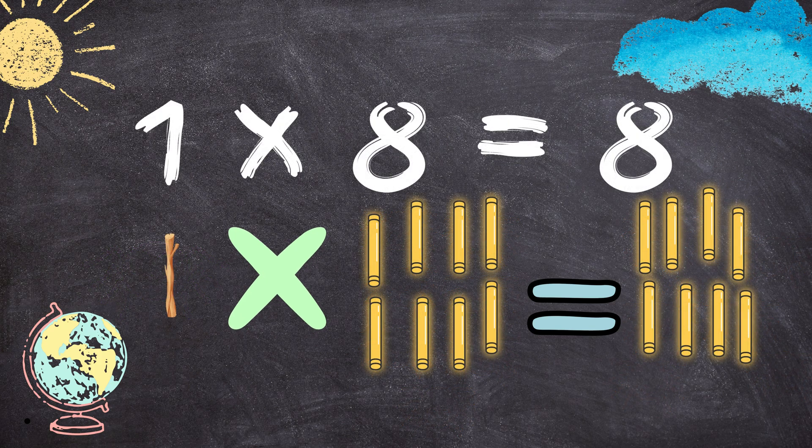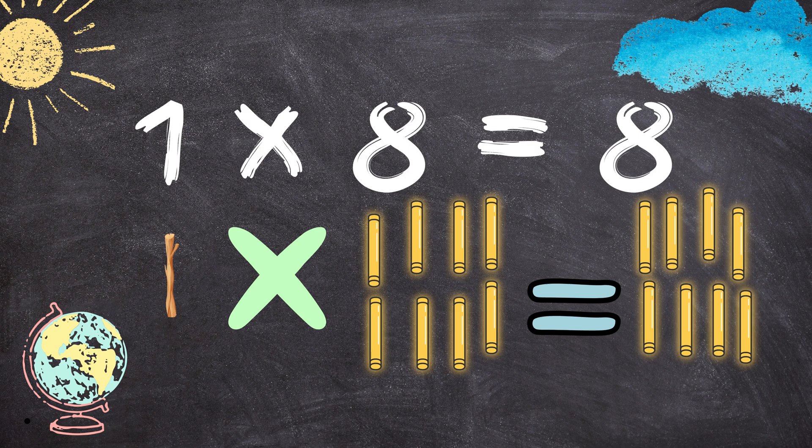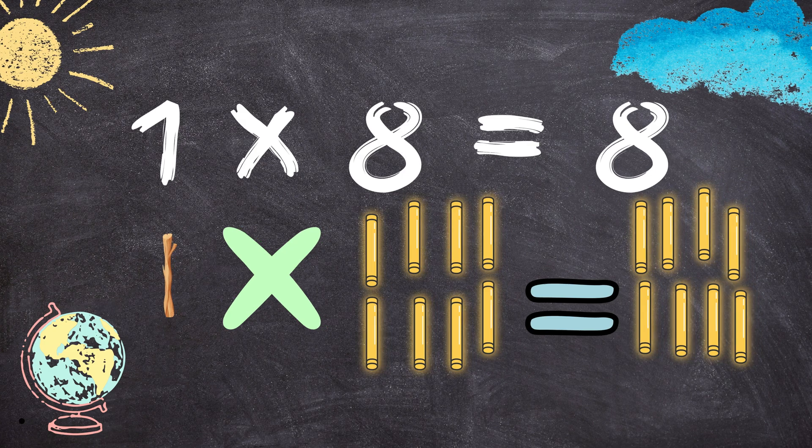1 times 8 equals 8. 1 stick multiplied by 8 sticks will give you 1, 2, 3, 4, 5, 6, 7, 8 sticks.